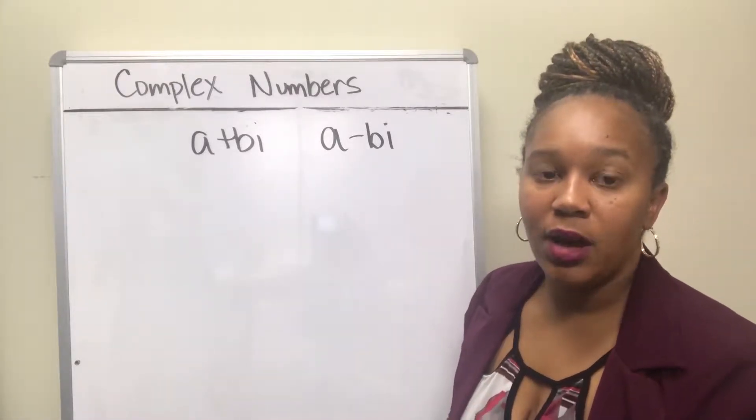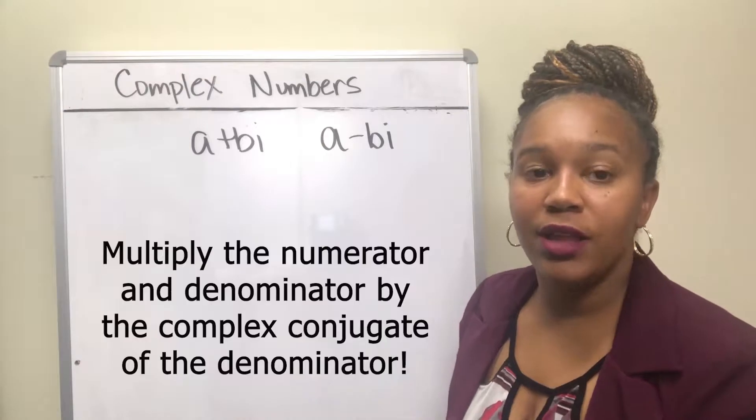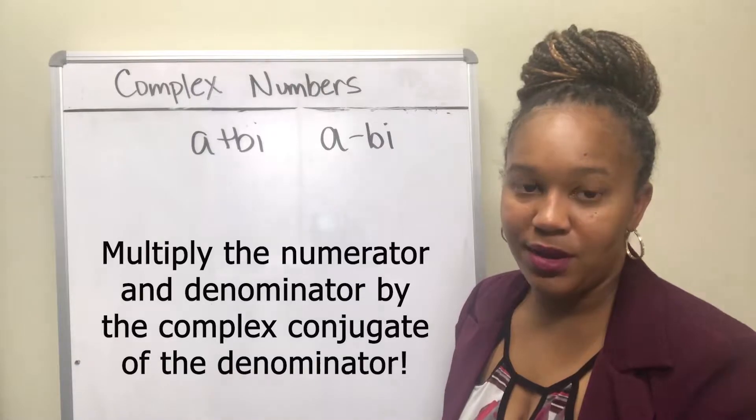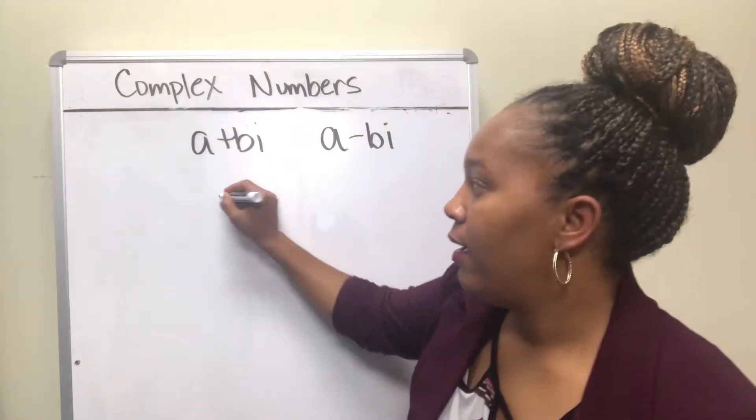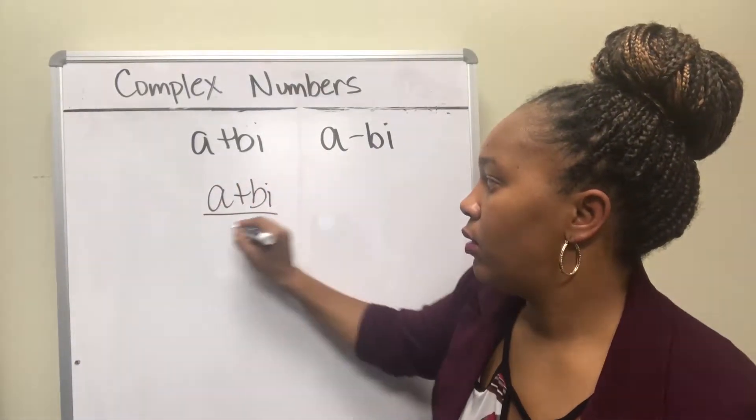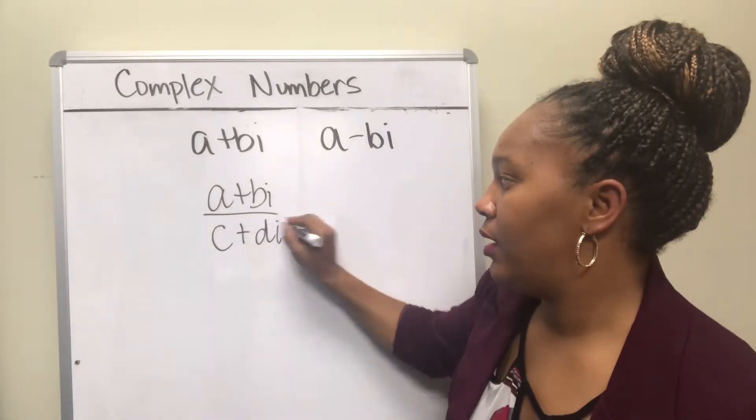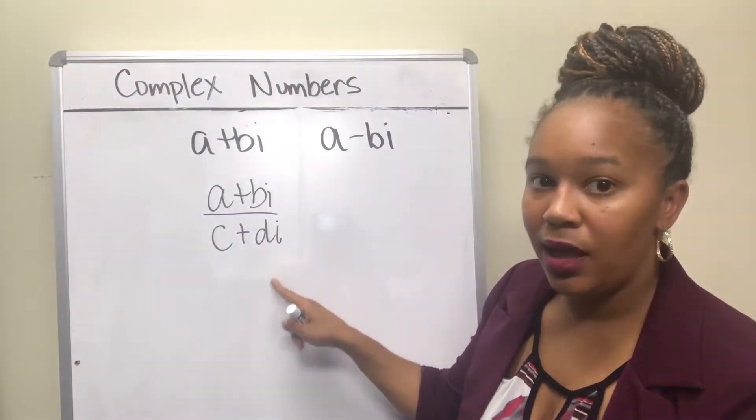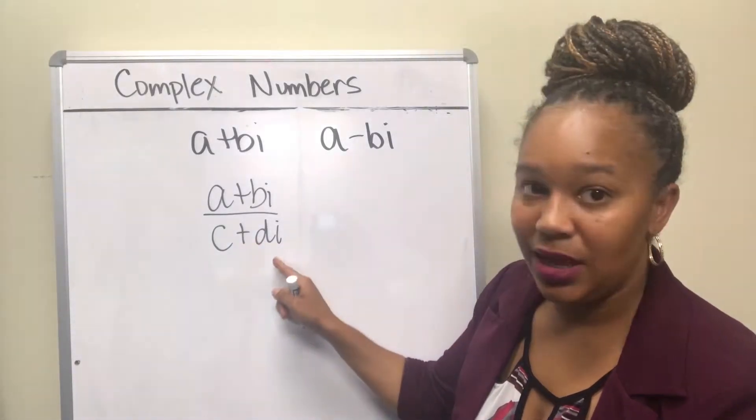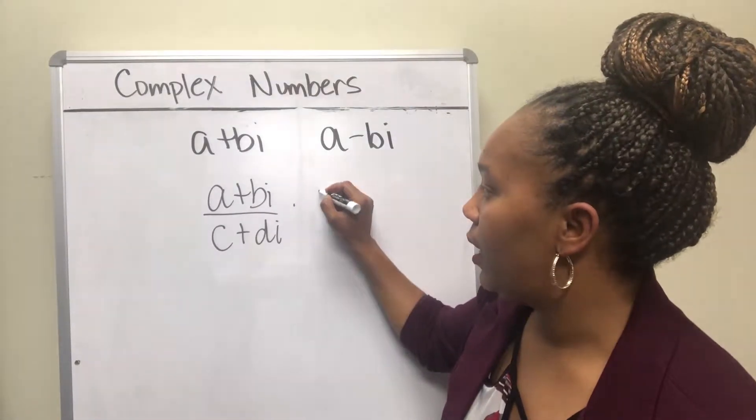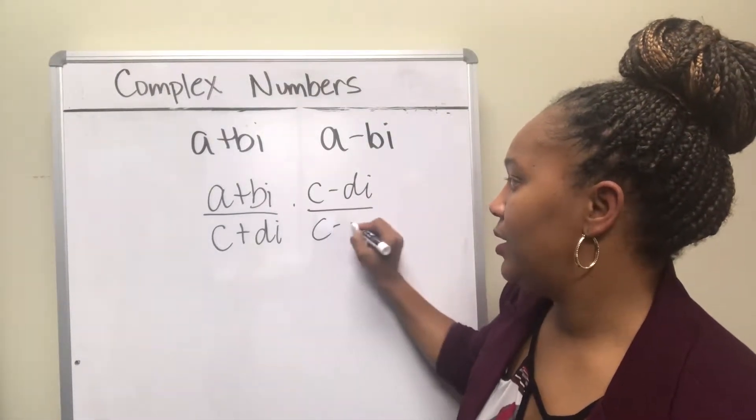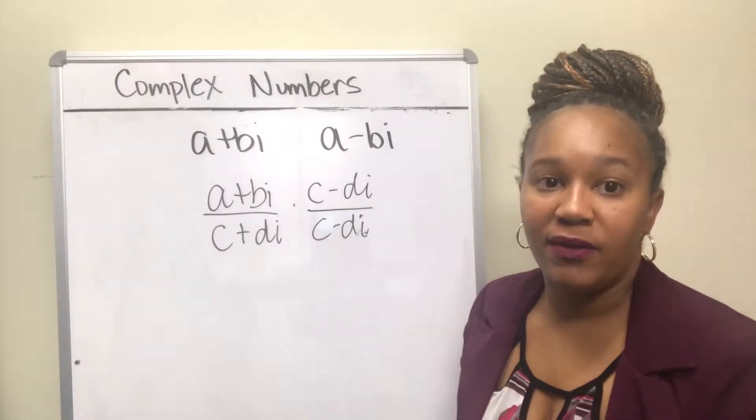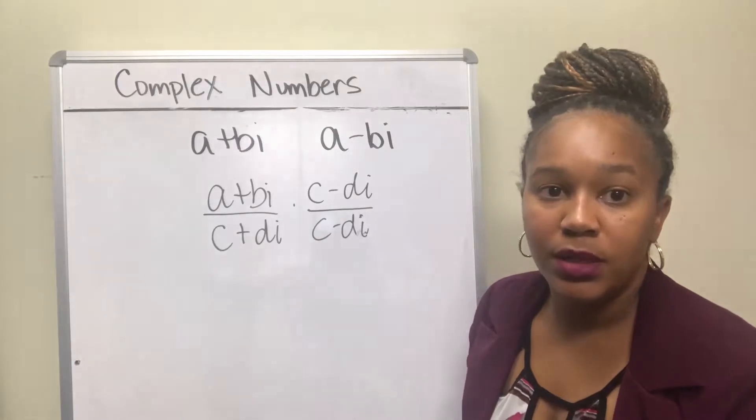So whenever you divide complex numbers, what you want to do is multiply the numerator and the denominator by the complex conjugate of the denominator. So what does that look like? If I have a plus bi over c plus di, then I want to take the conjugate of the denominator. So the denominator c plus di, the conjugate of that would be c minus di. So I would multiply top and bottom by c minus di. I will multiply it and simplify it and put my final answer in the form of a complex number a plus bi.